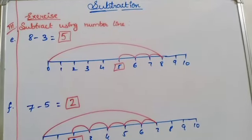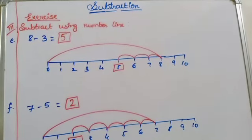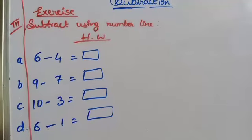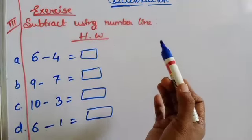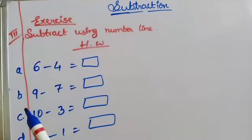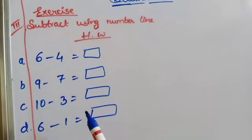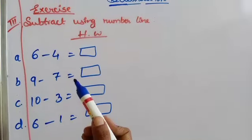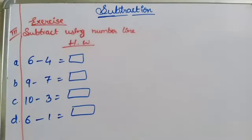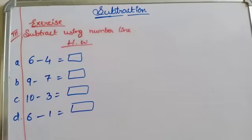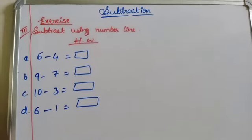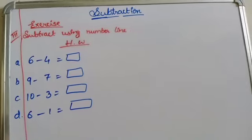Related to this I will give you some sums — you have to find out the answers by using the number line. Here is the homework: the first one is 6 minus 4, the second is 9 minus 7, the third is 10 minus 3, and the fourth is 6 minus 1. Write neatly in your class workbook — the sums we solved and the homework — and send them to me. See you in the next class, children. Take care and bye bye.